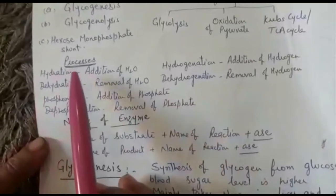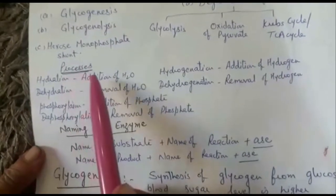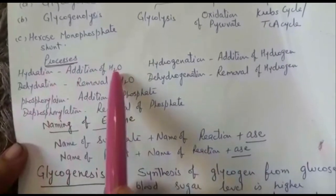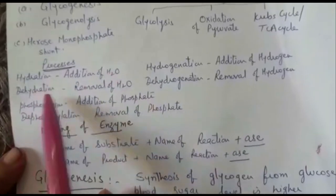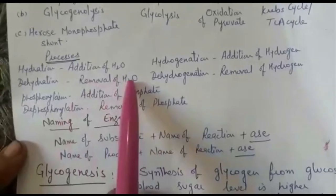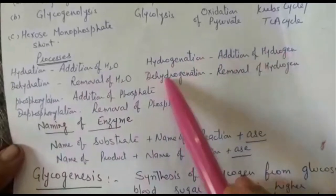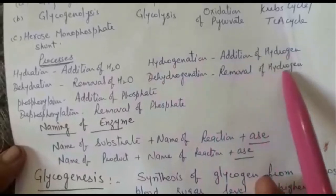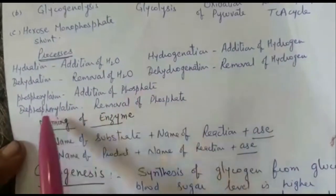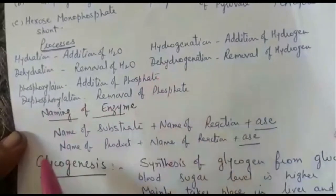Before I start with carbohydrate metabolism, I want to tell you basic information about how enzymes and processes are named. Hydration means addition of water, dehydration means removal of water. Hydrogenation means addition of hydrogen, dehydrogenation means removal of hydrogen. Phosphorylation means addition of phosphate, and dephosphorylation means removal of phosphate. That is how processes are named.